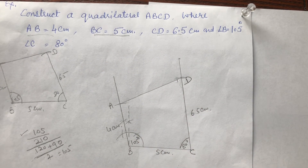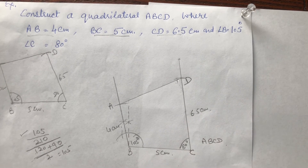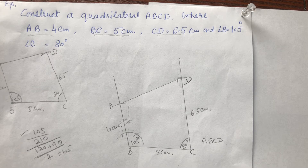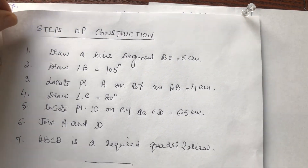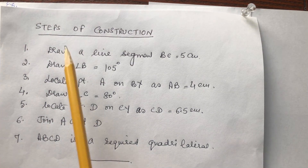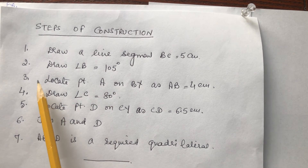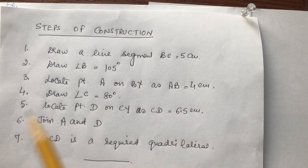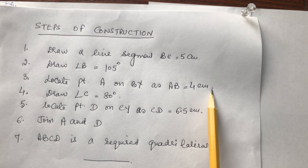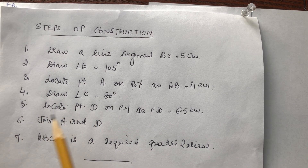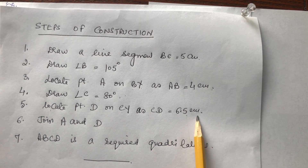ABCD is the required quadrilateral. You have to write down the steps also. The steps of construction are: Step 1 — draw line segment BC equal to 5 cm. Step 2 — draw angle B equal to 105 degrees at point B. Step 3 — locate point A on BX such that AB equals 4 cm. Step 4 — draw angle C equal to 80 degrees at point C. Step 5 — locate point D on CY such that CD equals 6.5 cm. Join A and D.